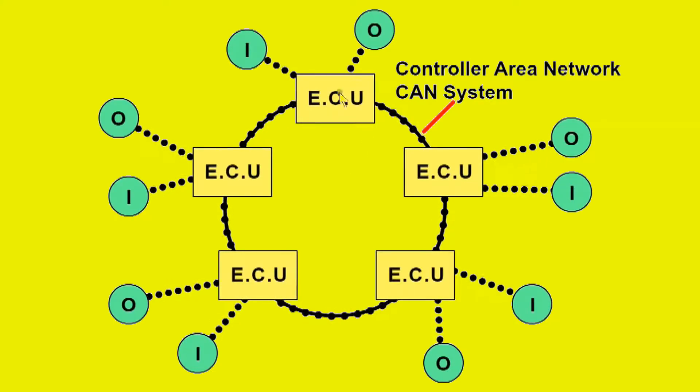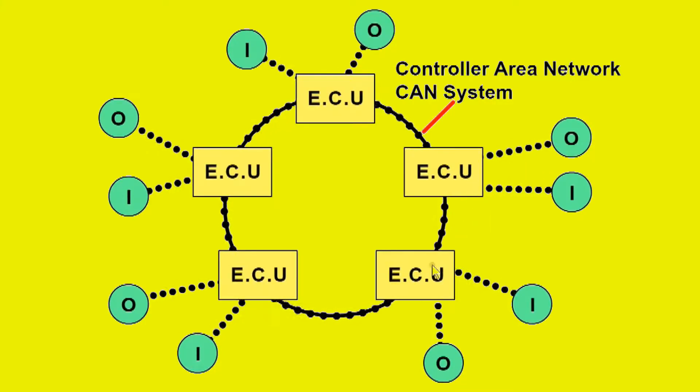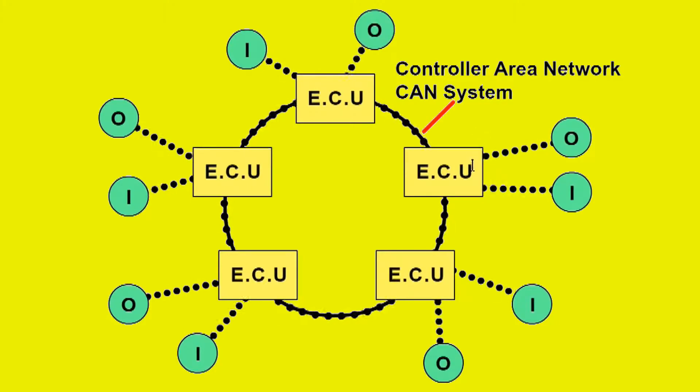Most cars have separate ECUs for different control systems, with each ECU having inputs and outputs. For example, the anti-lock braking system would have a separate ECU with the engine management ECU. All the information is transmitted between the ECUs using the bus system called a controller area network or CAN system. Each ECU is programmed to accept relevant information if required. For example, road speed might be relevant to a number of control systems.